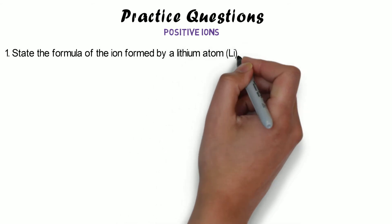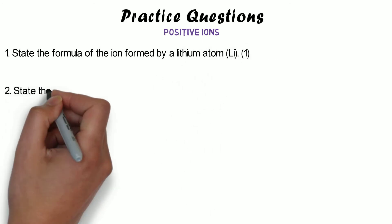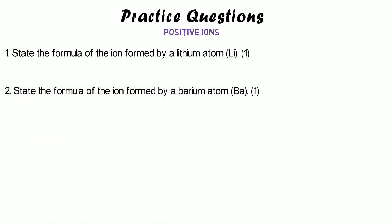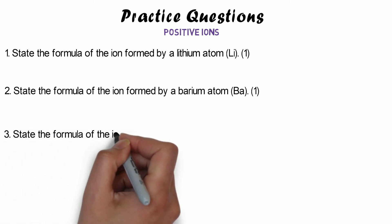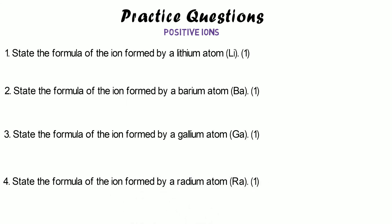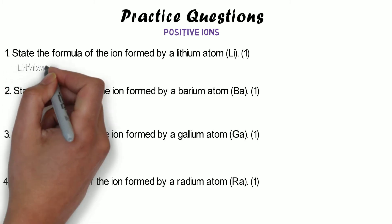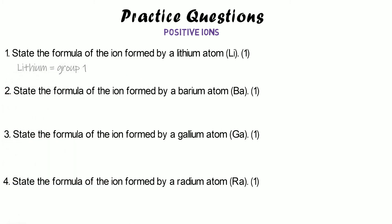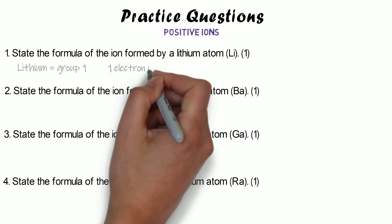Let's look at some practice questions similar to what you'd be asked in an exam. You need to work out the formula of the ion formed by each atom: a lithium atom, a barium atom, a gallium atom, and a radium atom. A periodic table is linked in the description. Pause the video, have a go, and unpause when you're ready. Lithium is in group one, so it has one electron in its outer shell.